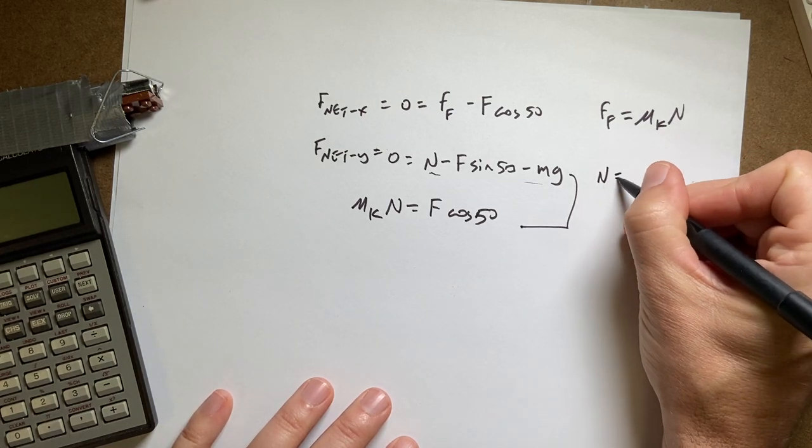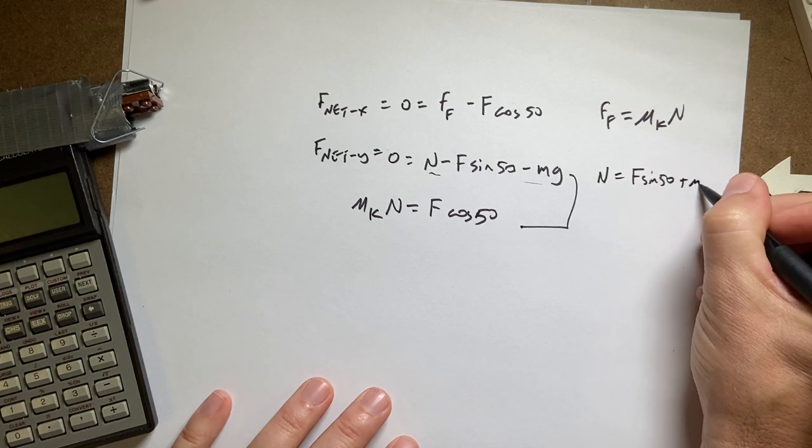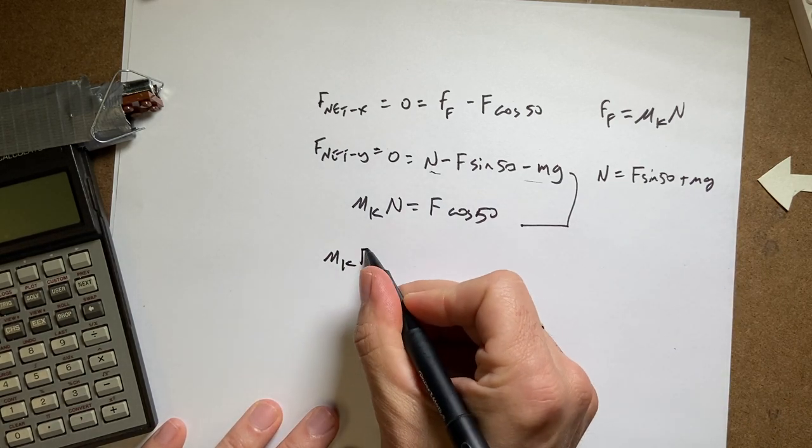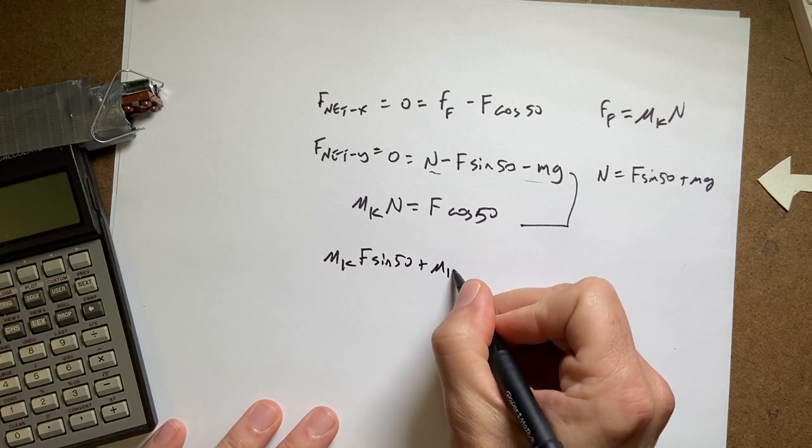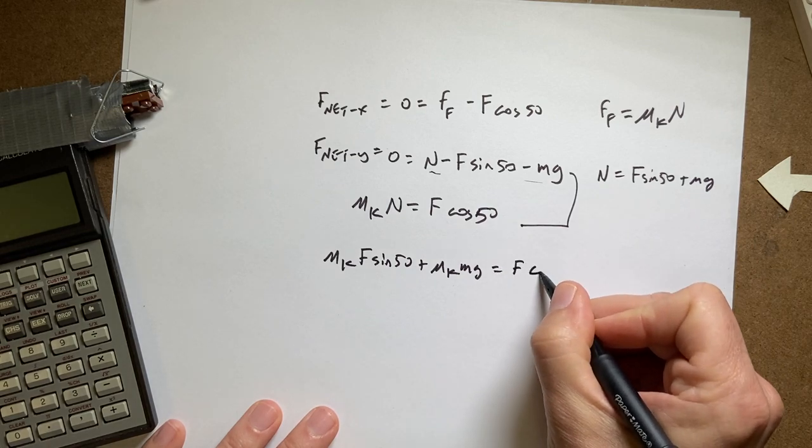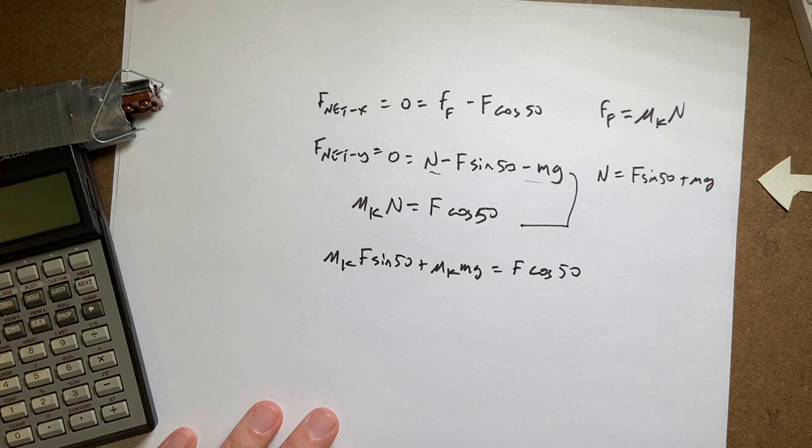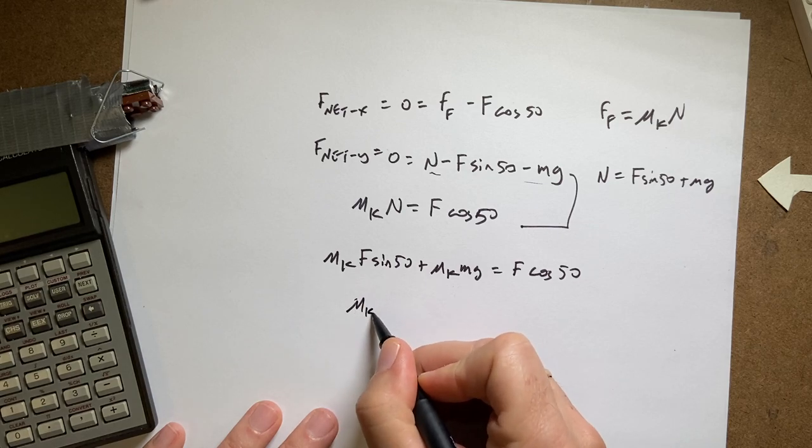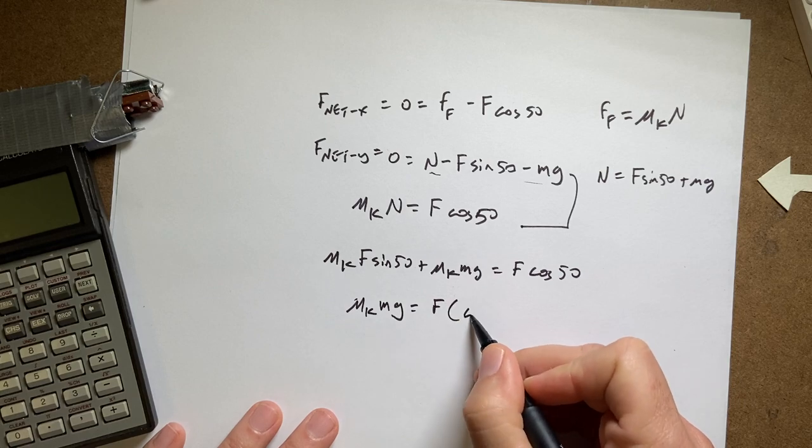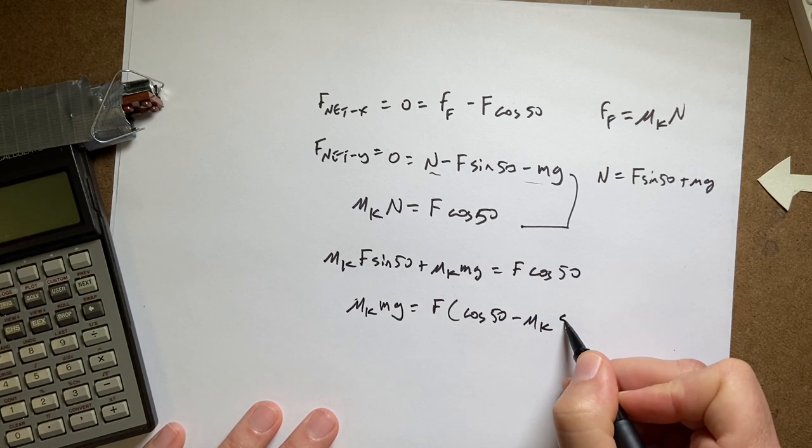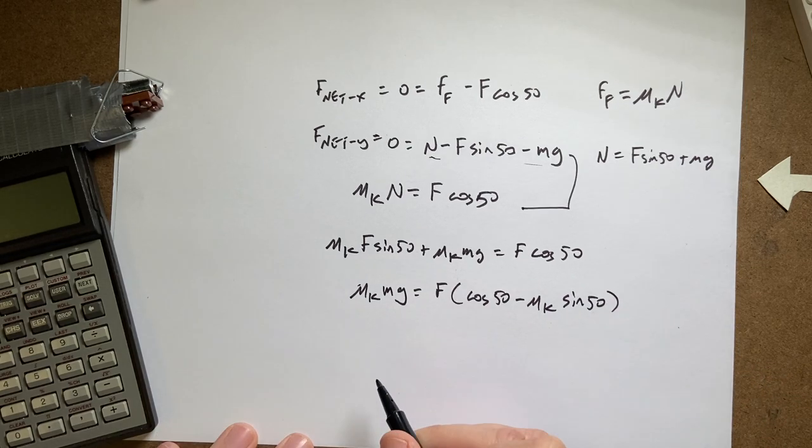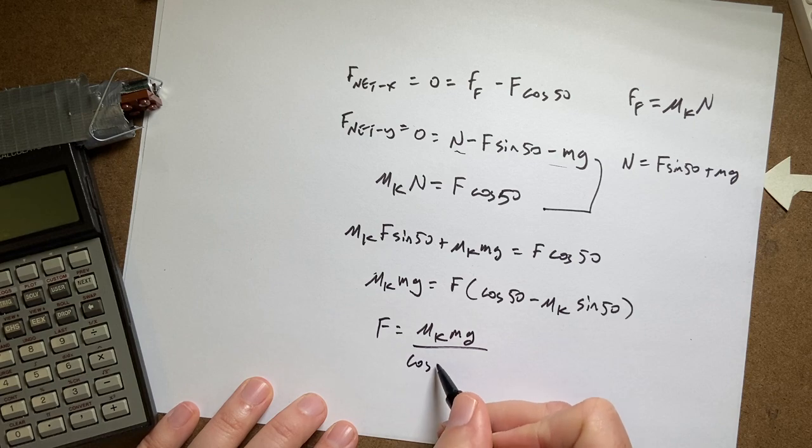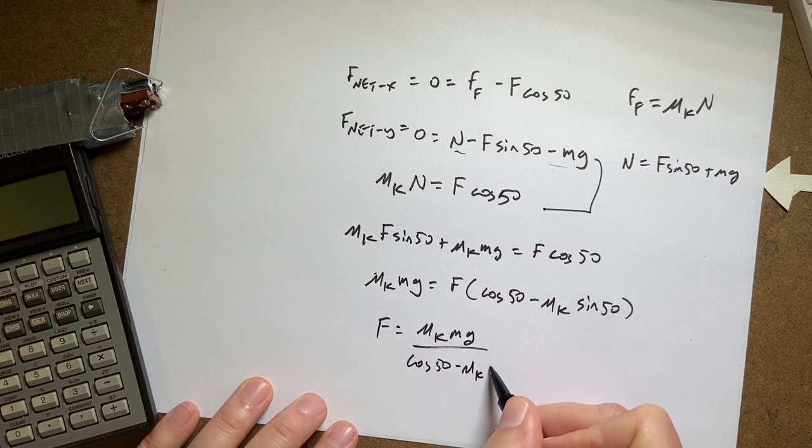So this is going to be n equals f sine 50 plus mg. So if I put that in here, I get mu k times f sine 50 plus mu k times mg equals f cosine 50. Okay, so now I'm going to subtract this from both sides and factor out the f. So I get mu k mg equals f times cosine of 50 minus mu k sine of 50.